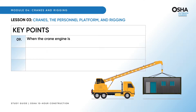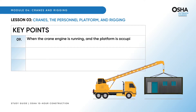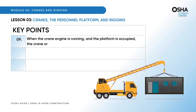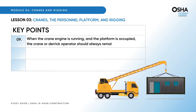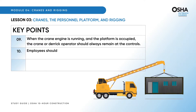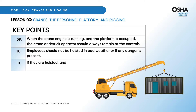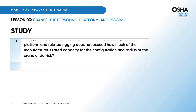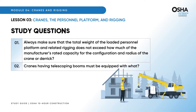When the crane engine is running and the platform is occupied, the crane or derrick operator should always remain at the controls. Employees should not be hoisted in bad weather or if any danger is present. If they are hoisted and a dangerous situation arises, they should be grounded immediately and safely. Now look at the study questions.